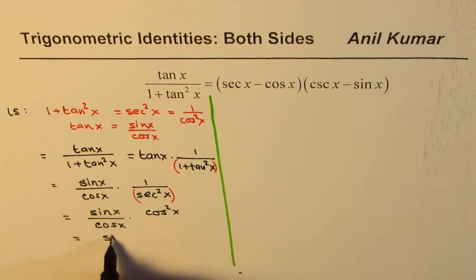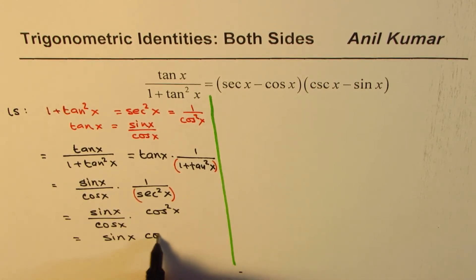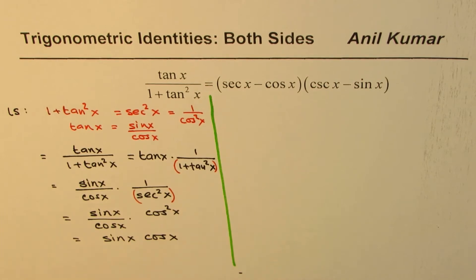So I hope these steps are simple and clear, we just cancelled this part, so we get sin x cos x on the left side.